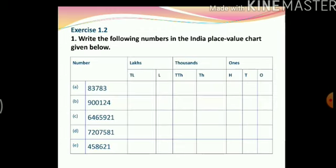Now we come to the second exercise of this chapter. Write the following numbers in the Indian place value chart — you have some 5, 6 and 7 digit numbers. Just placing them will give you an idea of the place value of each digit. Remember to start from the extreme right corner. So for the number 83783: 3 will go in the ones place, 8 in the tens place, 7 in the hundreds place, 3 in the thousands place, and 8 in the ten thousands place. I hope you will be able to do the rest of the questions.